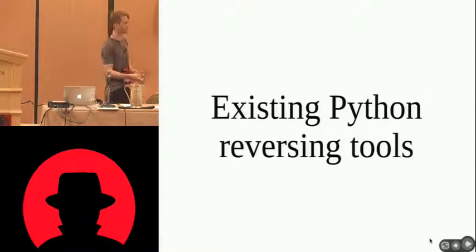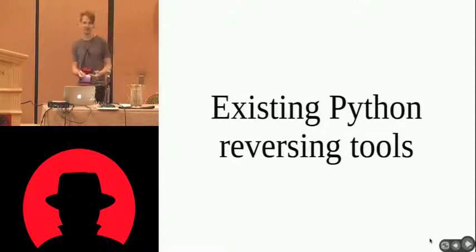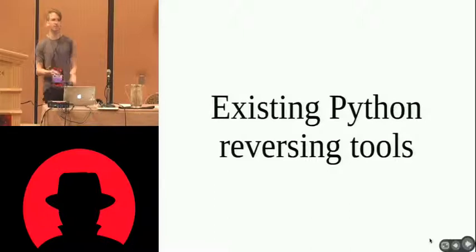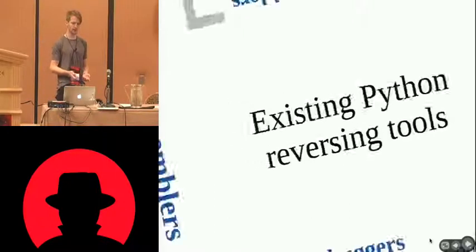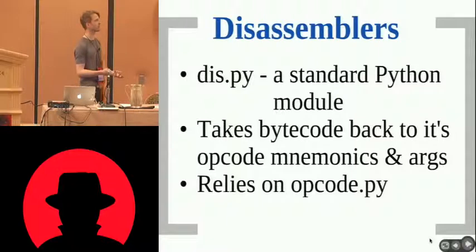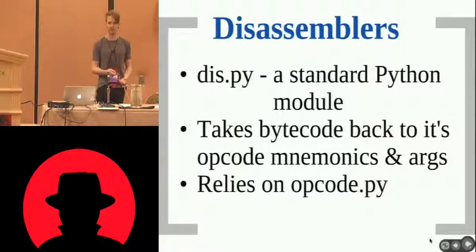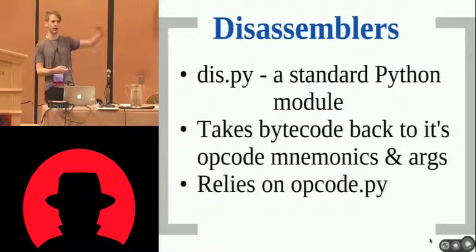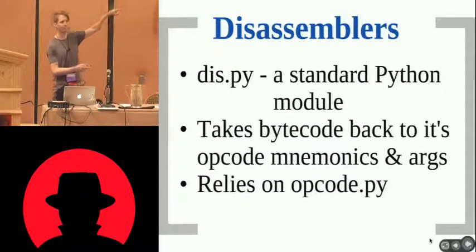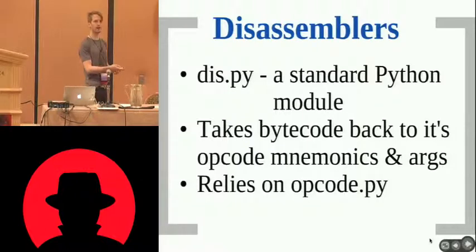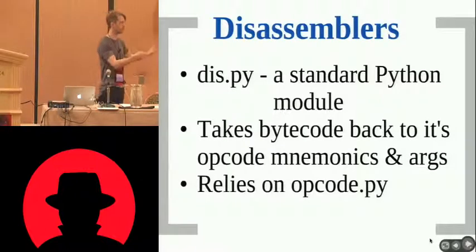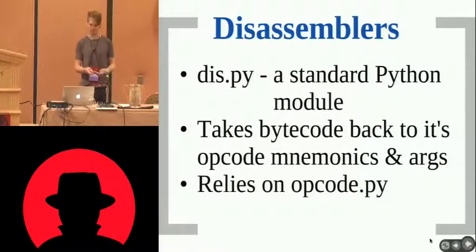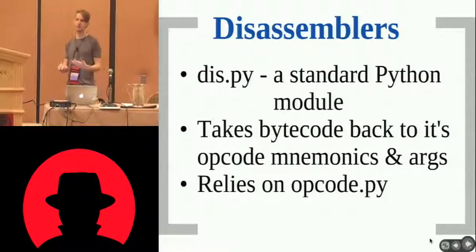So, we've blasted through how Python works, what it looks like, what a code object is, and how everything stacks up. What tools exist currently for reversing Python? General categories: obviously, disassemblers. dis.py comes with Python as standard — it's just a stdlib module. You can pass in code objects or high-level objects and it will give a representation of the instructions and their arguments. This implicitly relies on opcodes.py, also a standard library module, for those mappings.